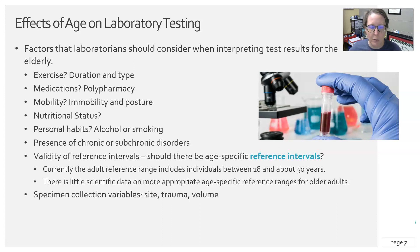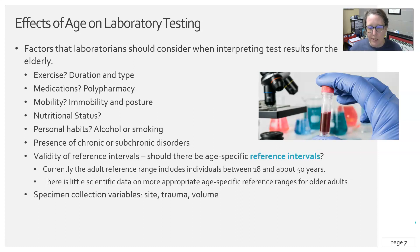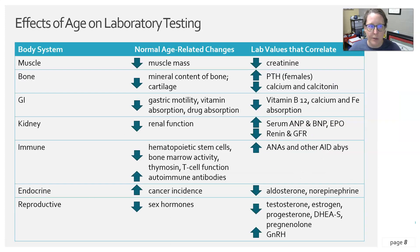There are also specimen collection variables to consider — site, trauma, and volume. In elderly patients, there is less availability of collection sites, and it may be harder to access certain sites. Their veins are more fragile, which can lead to trauma, bruising, and blown veins. It is often harder to obtain an adequate volume of sample.